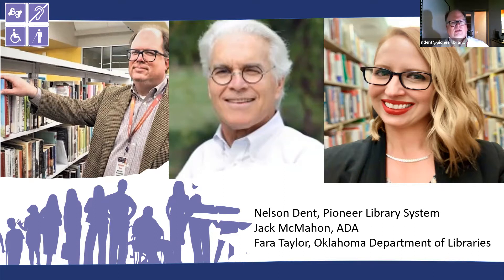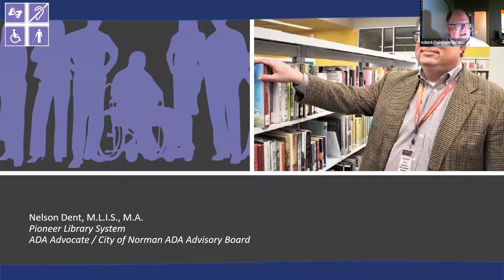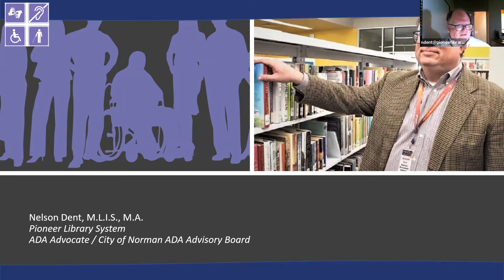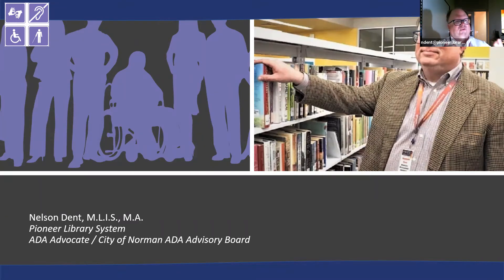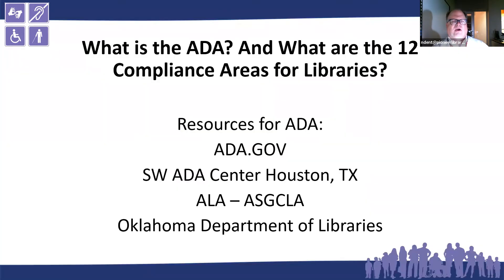I'm going to go first and talk about the ADA. I want to give you some background, and I have a 12-point guide for all libraries — 12 compliance areas that everybody needs to know. My name is Nelson. I'm with the Pioneer Library System and also the City of Norman ADA Advisory Board. I was born with Usher syndrome type two — I wear cochlear implants and also have tunnel vision and nighttime blindness. You might see me with a white cane at conferences. I've been with the Pioneer Library System for 20 years, and I'm an ADA advocate.